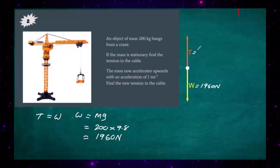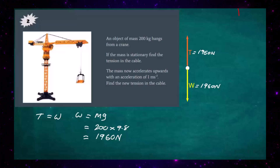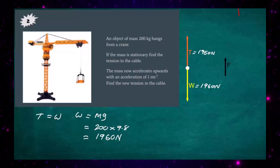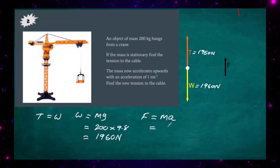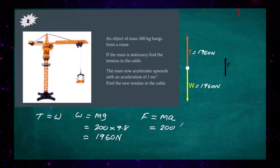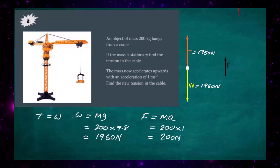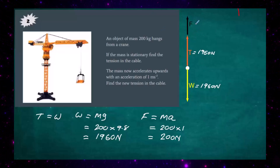Therefore the tension in the rope to keep the object stationary must also be 1960 newtons. Now when the object accelerates upwards, there is an unbalanced force acting on it. We can calculate that unbalanced force because we know the acceleration and the mass: unbalanced force equals MA, which is 200 multiplied by 1, giving an unbalanced force of 200 newtons acting upward.